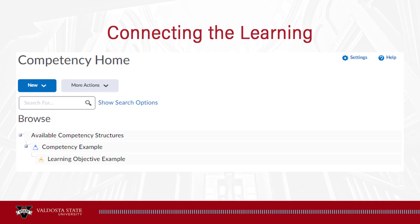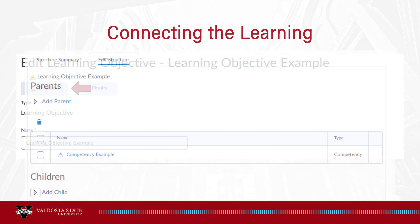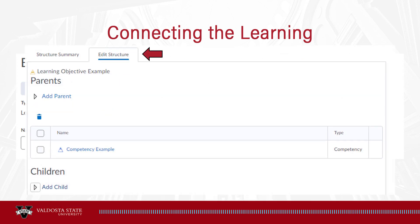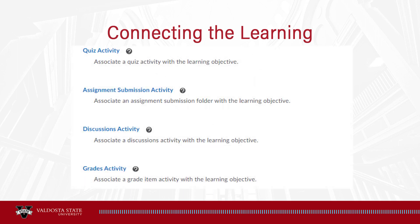To link an activity to the learning objective, on the competency homepage find and select the learning objective. Click the Structure button, go to the Edit Structure tab, then scroll down and click Add Child. From that list, click Incorporate Activities. On the pop-up window, select the type of activity you would like to connect to the learning objective, then follow the steps on the page to connect the activity. The Center for eLearning also has a guide for competencies and learning objectives that covers the steps for each type of activity.